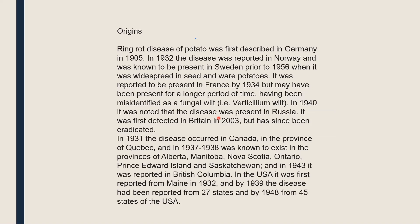The origin of the pathogen is difficult to determine, but as early as 1905 a lot of diseased potatoes were described in Germany. In 1932 the disease was reported in Norway, and it was known to be present in Sweden prior to 1956 when it was widespread in seed potatoes. France reported it in 1934, Russia in 1934, and in Great Britain it was reported in 2003 but has since been very much controlled and almost eradicated.